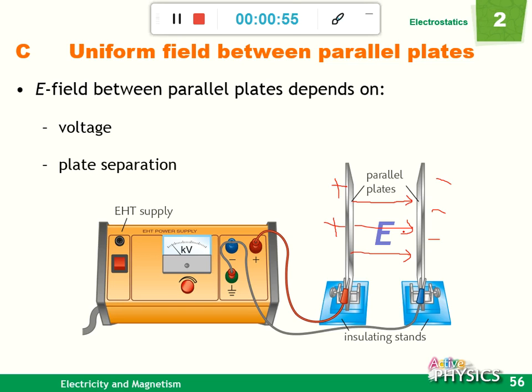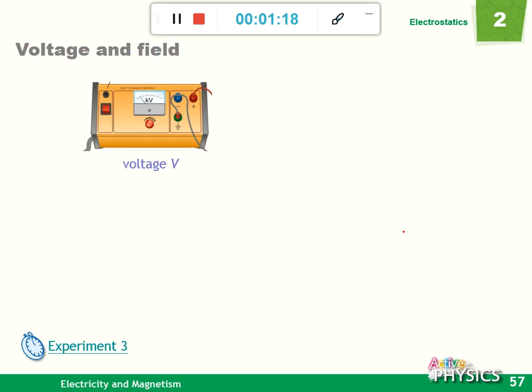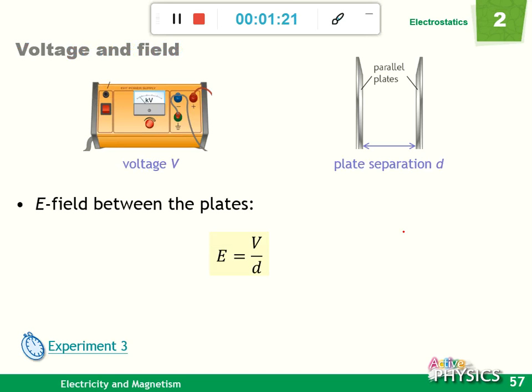The electric field strength depends on the voltage between the plates. Usually, the EHT will be maybe 3 to 5 kV. It also depends on the plate separation. If the separation is smaller, the field will be stronger. Based on the definition, the E field equals voltage over distance, E = V/d. If voltage is higher or separation is smaller, then we will have a stronger field.